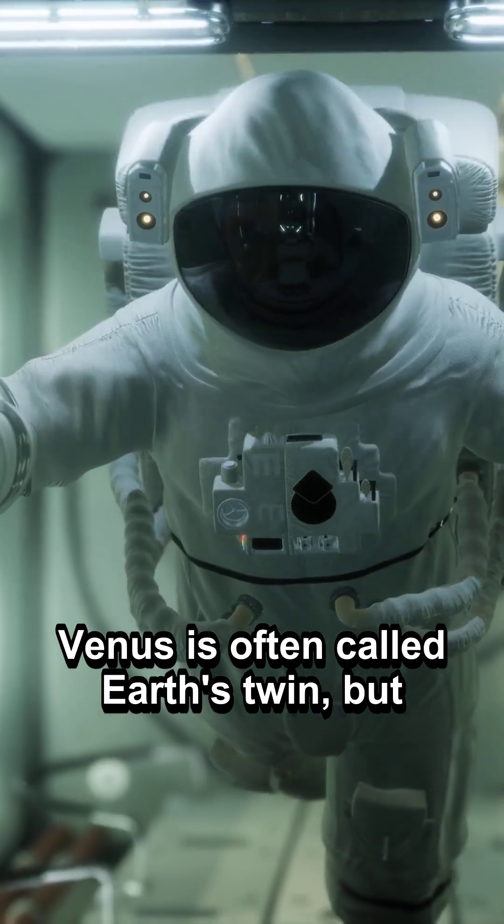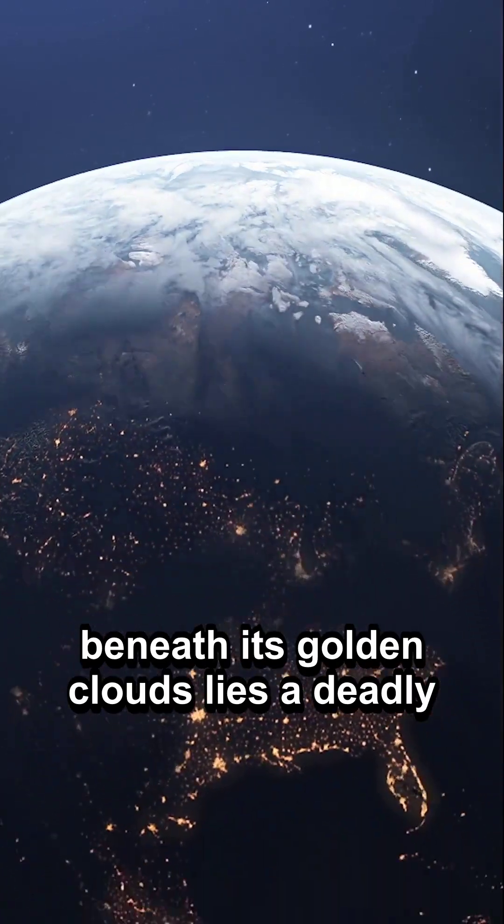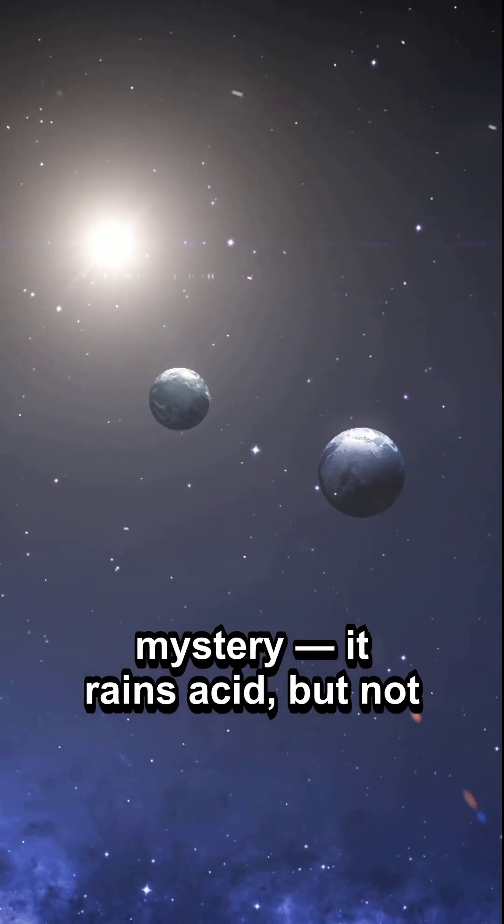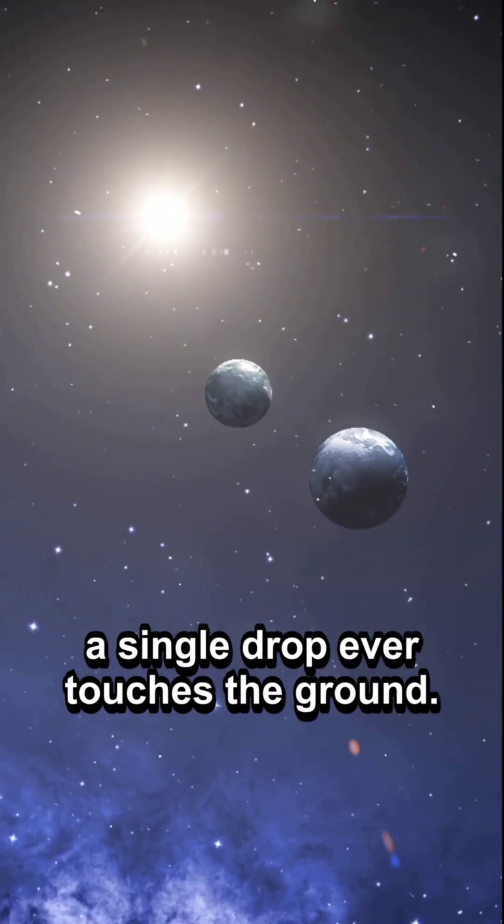Venus is often called Earth's twin, but beneath its golden clouds lies a deadly mystery. It rains acid, but not a single drop ever touches the ground.